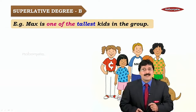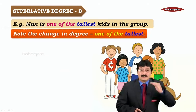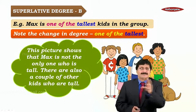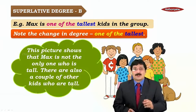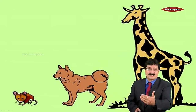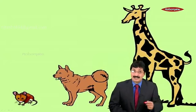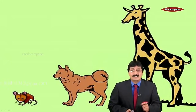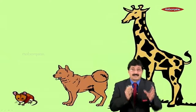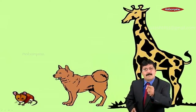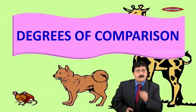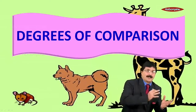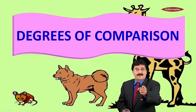Let's check another superlative sentence: 'Max is one of the tallest kids in the group.' Here Max is not the ultimate tallest — he is not the single tallest; there are one or two others who are as tall. He is one of the tallest. So my dear friends, we have learnt our bodyguards and the different types of degrees — positive, comparative, superlative. We shall be back in the next module where we are going to change from positive to comparative, comparative to superlative, and vice versa. You are going to rock this, my friends!